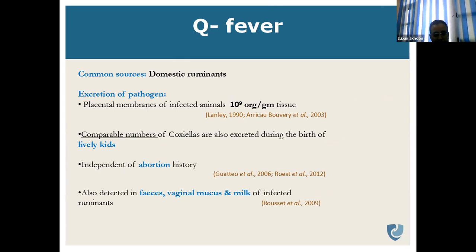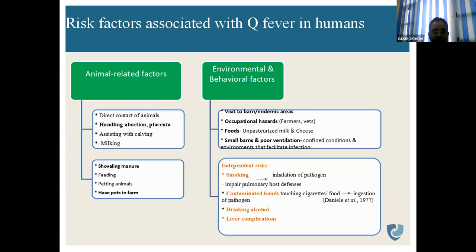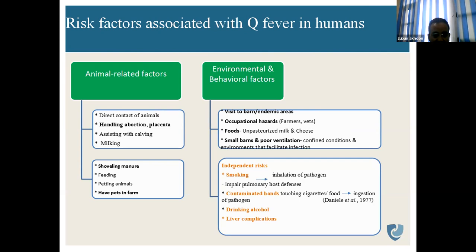Common sources are domestic ruminants. It can be excreted by placental membranes of infected animals, carrying 10⁹ organisms per gram of tissue. Comparable large numbers of Coxiella are also excreted during birth. It has also been detected in faeces, vaginal mucus, and milk of infected animals. Risk factors include direct contact with animals, handling abortion cases or placenta, assisting in calving or lambing, milking, shoveling manure, feeding or petting animals.